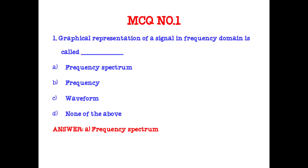First question: graphical representation of a signal in frequency domain is called frequency spectrum. What is a frequency spectrum? Frequency spectrum of a signal is the distribution of amplitude and phases of each frequency component against frequency. So the answer for this question is frequency spectrum.